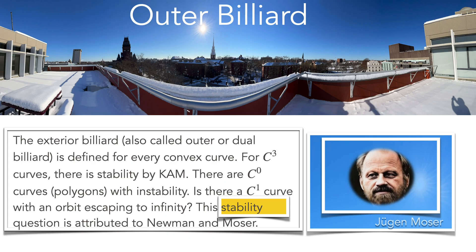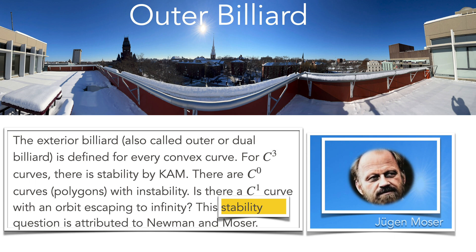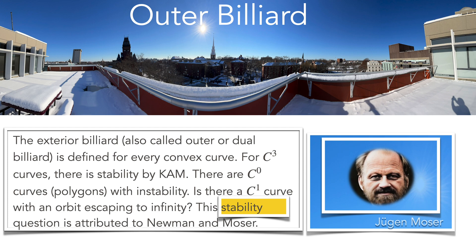The exterior billiard is an area-preserving map on the outside of a convex table. In the smooth case, there are invariant curves preventing the orbits from escaping to infinity — that's KAM theory. In the differentiable C1 case, we do not know yet.